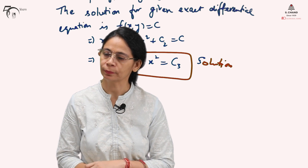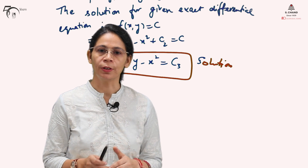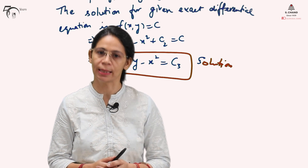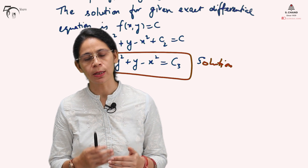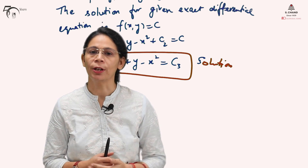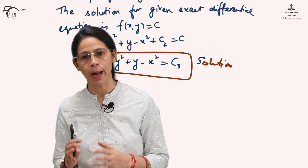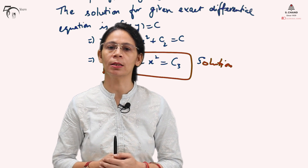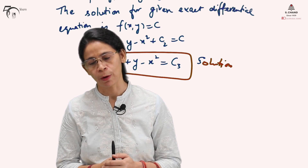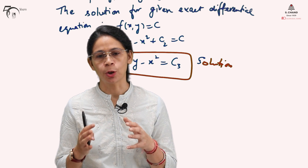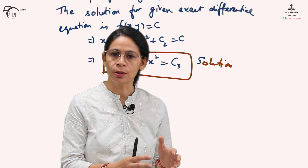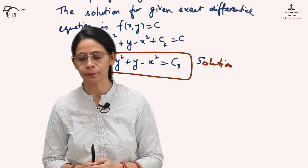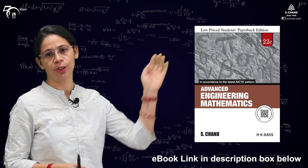In this video we have learned how to identify whether a given differential equation is exact, and if yes, how to find its solution. Any exact differential equation has a solution f(x,y) = c, where M(x,y) = ∂f/∂x and N(x,y) = ∂f/∂y. There are two solution methods: starting with M to find f(x,y), or starting with N to find f(x,y). For details, refer to the book from S.C.A.N Publishing — the link is in the description box.